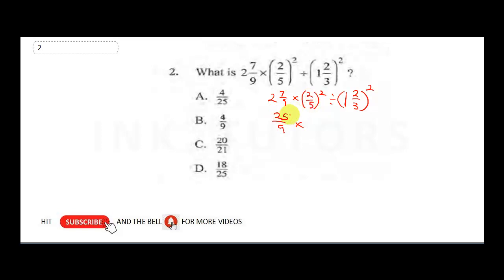Remember, when squaring anything in brackets, all factors must be squared. So two squared is four and five squared is 25, giving four over 25. Now convert one and two-thirds to an improper fraction: three times one is three, plus two gives five over three, all squared.